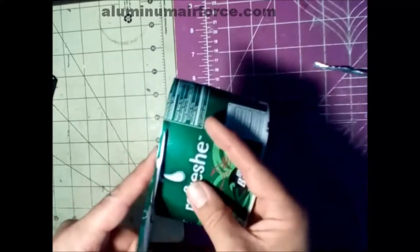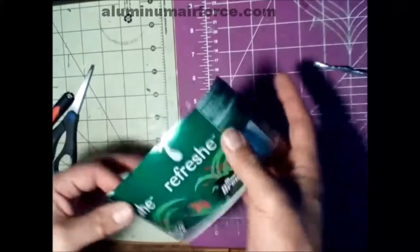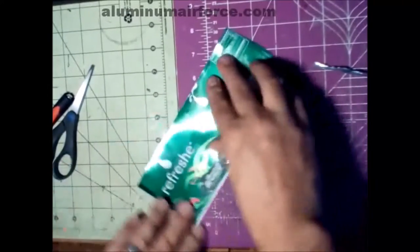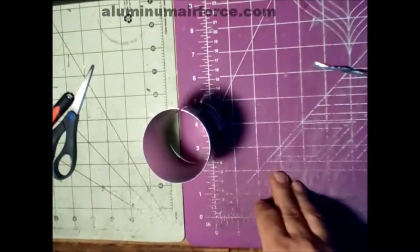And as you can see, we're getting nice, straight lines here, which are very critical to creating panels, doing a lot of the things we do here at the Aluminum Air Force. And the can will now lay flat. We can now work with it, trace our templates onto it. We're good to go.